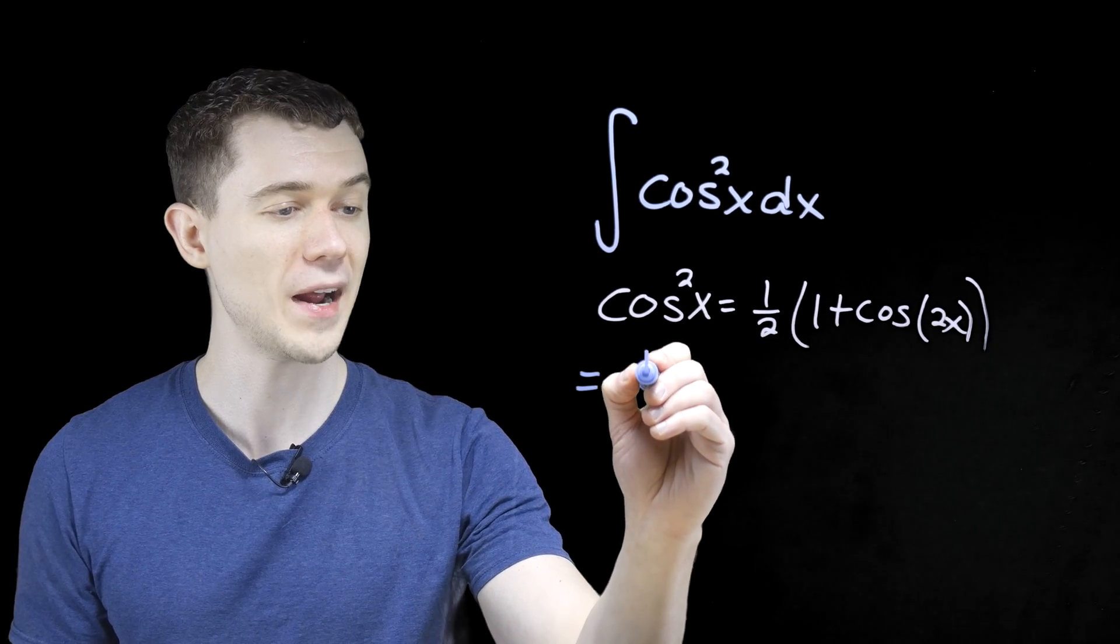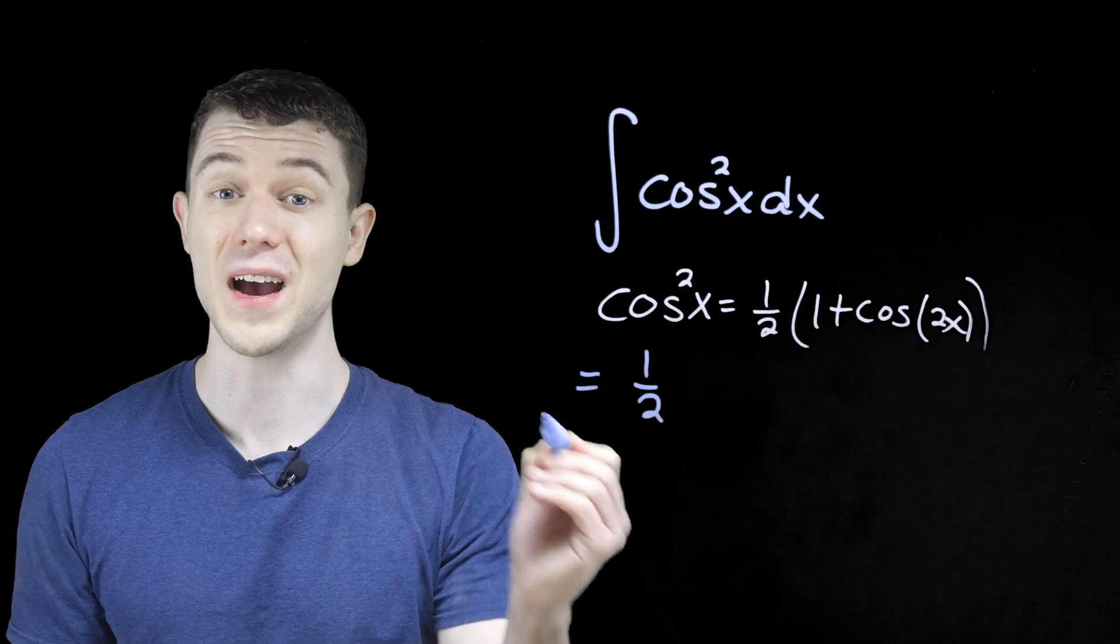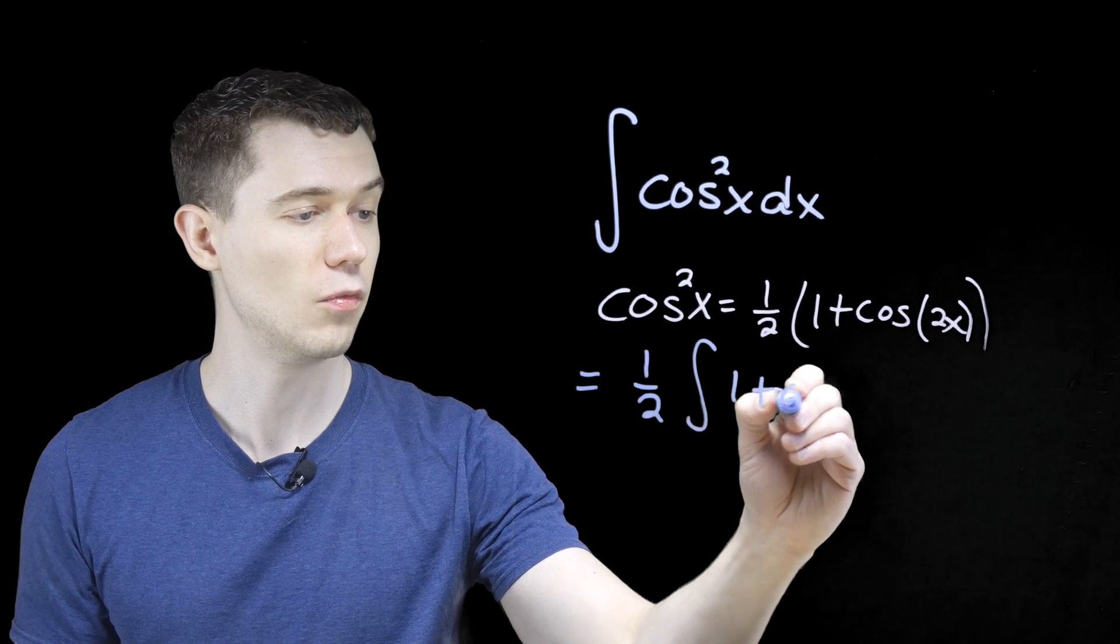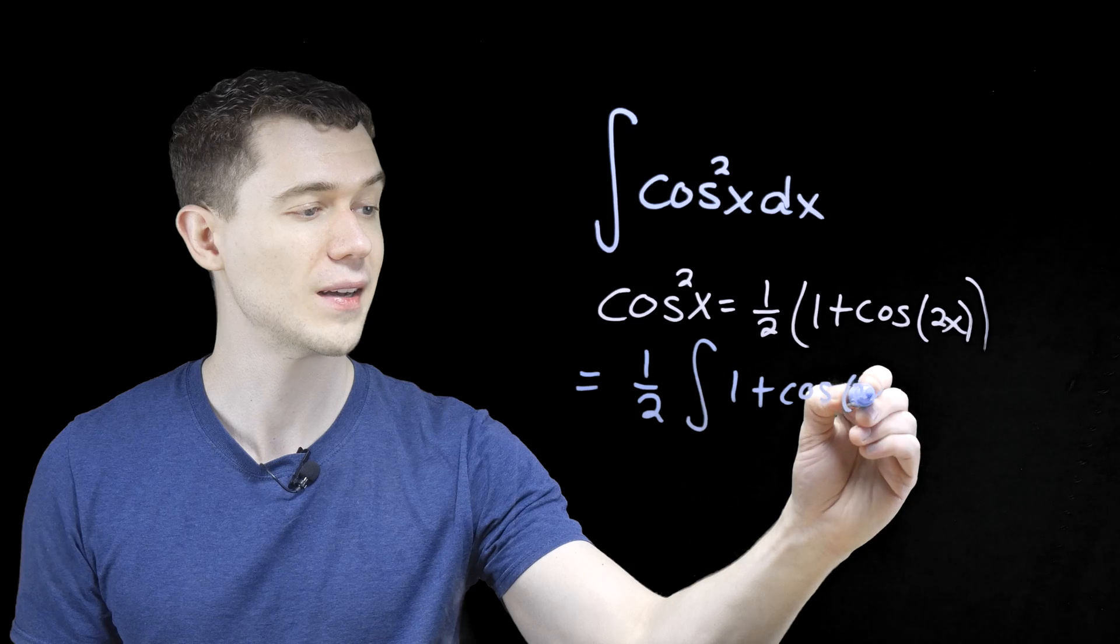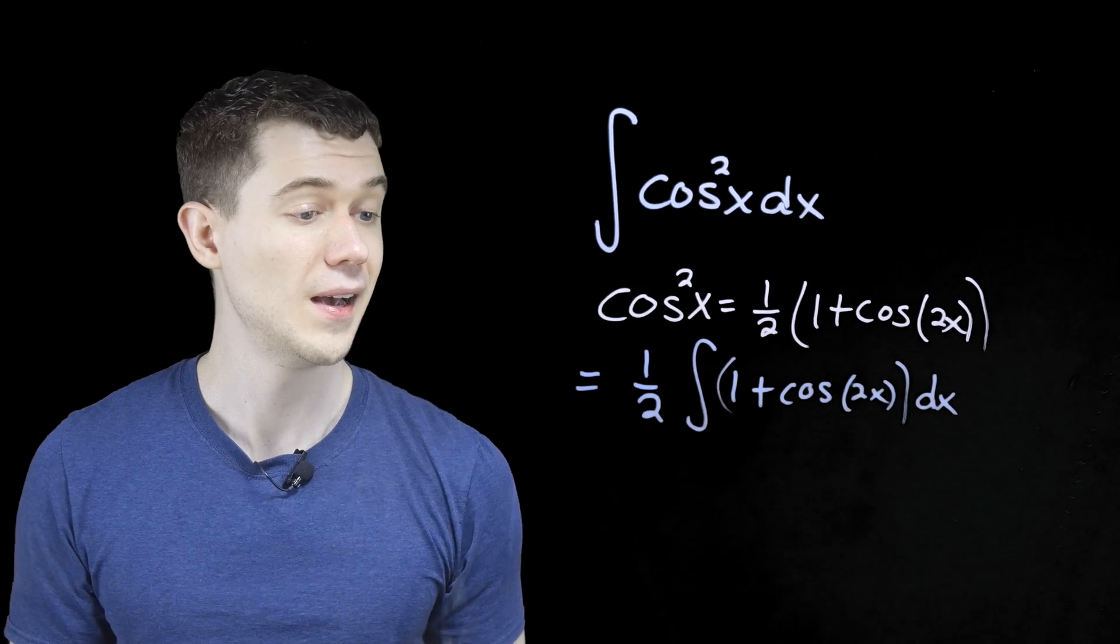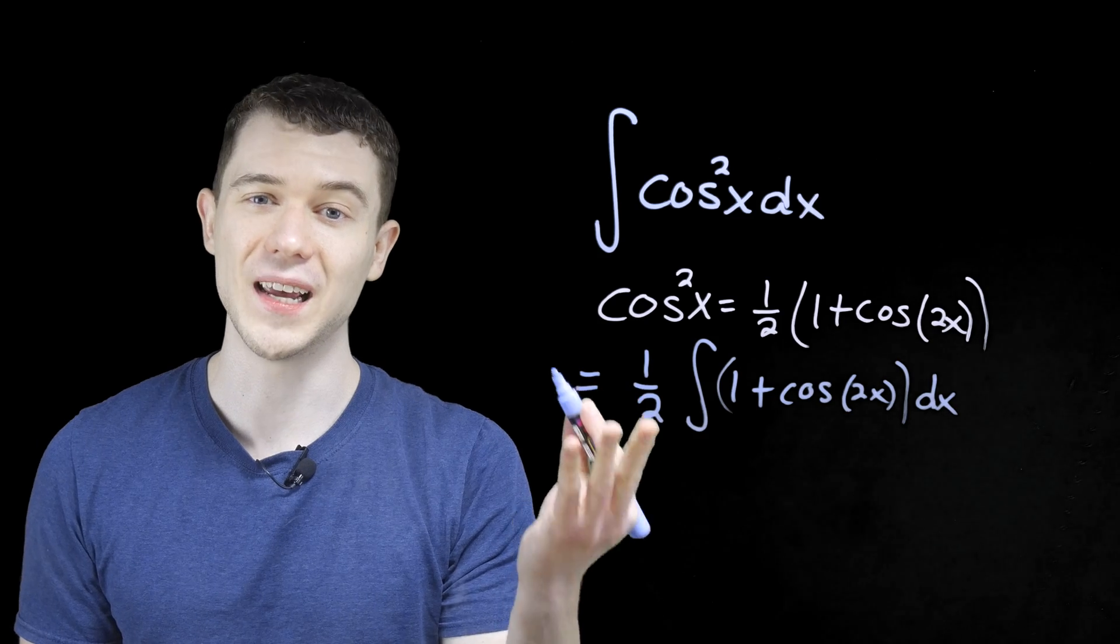So I'll pull that 1 half out front. We can factor constants out of integrands. And this will be the antiderivative of 1 plus cosine of 2x. This is still dx. And now this is something we can actually antiderive.